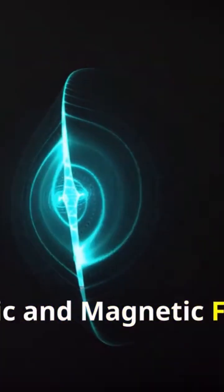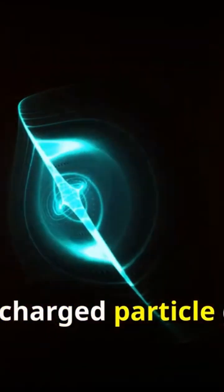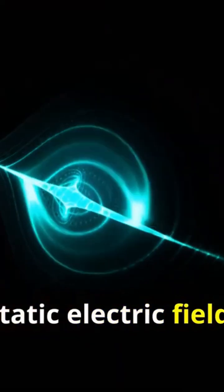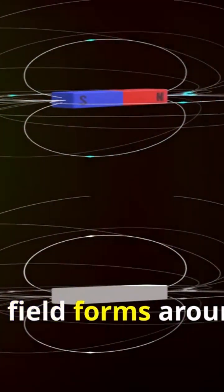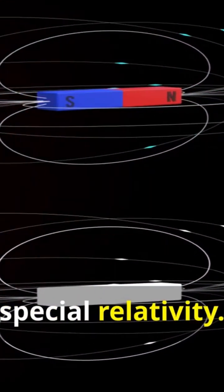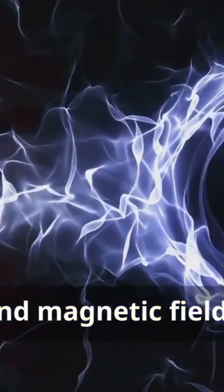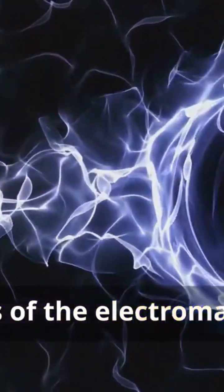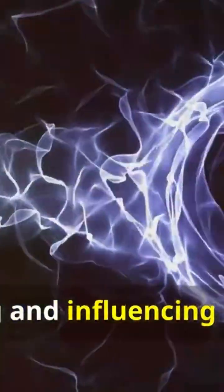Electric and magnetic fields: A motionless charged particle generates a static electric field. When the particle accelerates, a magnetic field forms around it due to special relativity. Electric and magnetic fields are two components of the electromagnetic field, interacting and influencing each other.